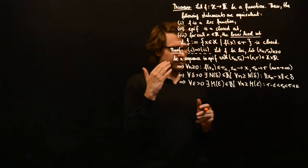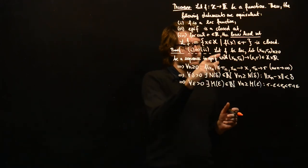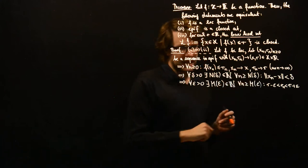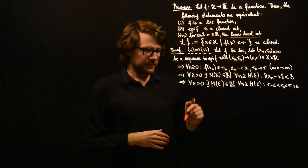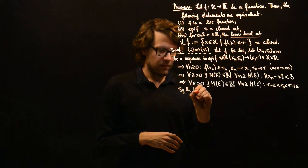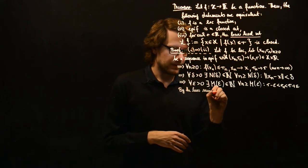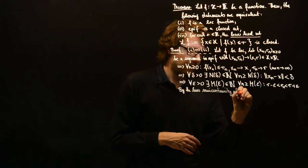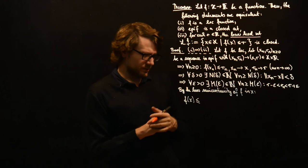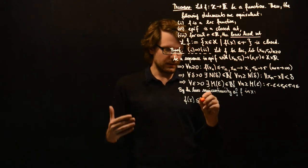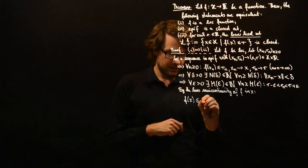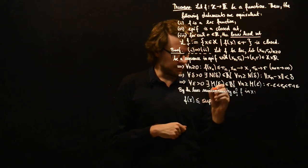Now we have to use the lower semi-continuity, obviously, because that's the only thing we have left. The lower semi-continuity has to be used at x, because that's where we converge to. By the lower semi-continuity of f at x, we have f(x) ≤ lim inf of f(x′) where x′ converges to x. We have defined this as the supremum over δ of the infimum over the δ-ball around x of f(x′).